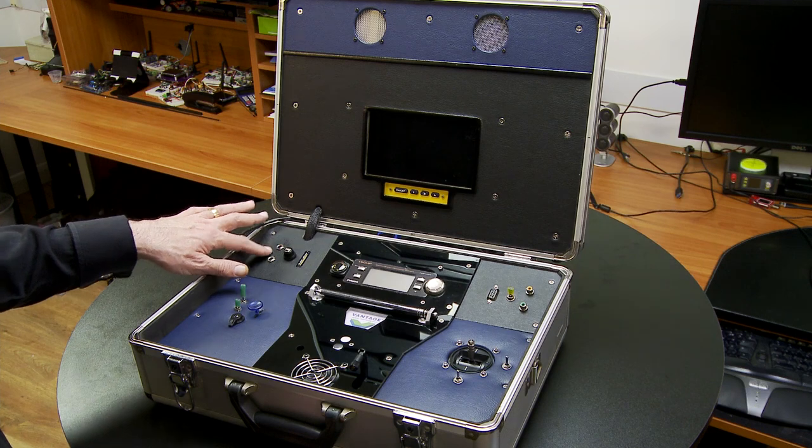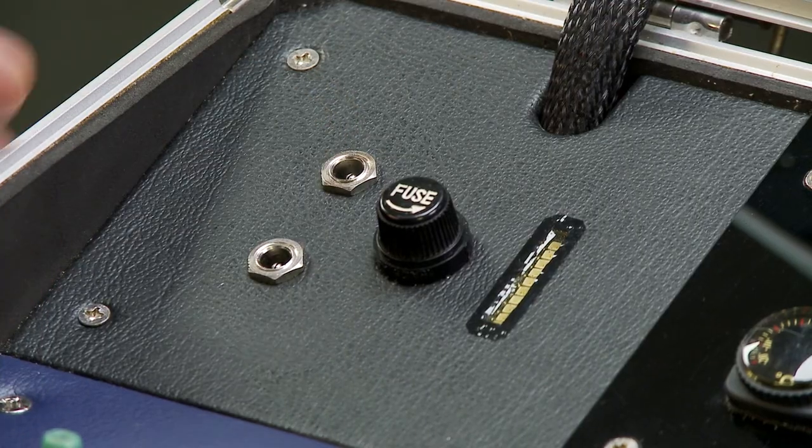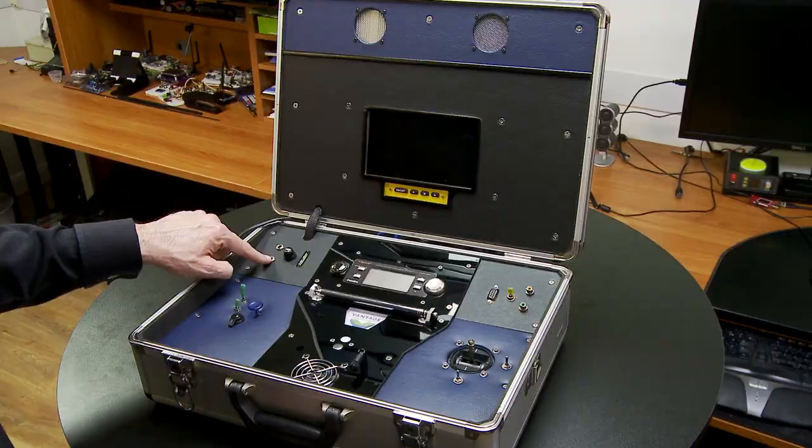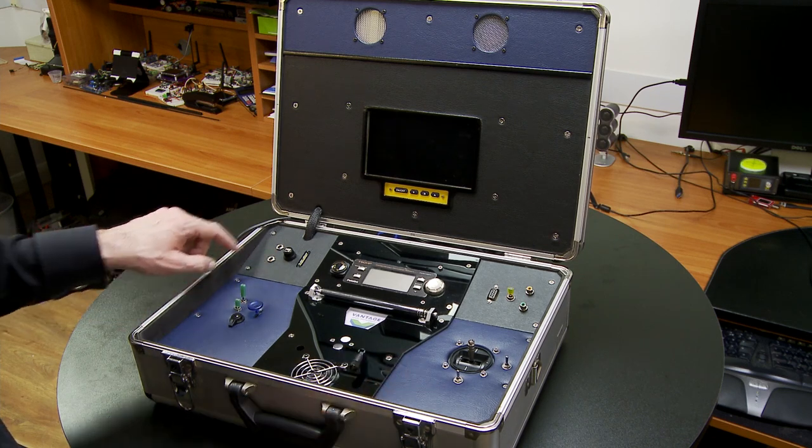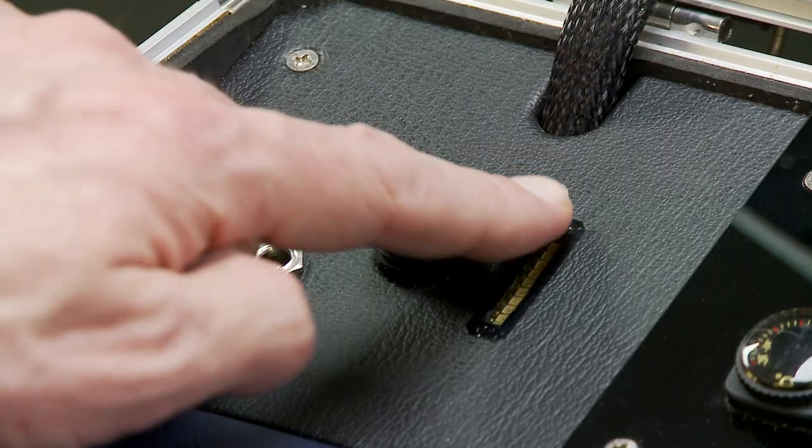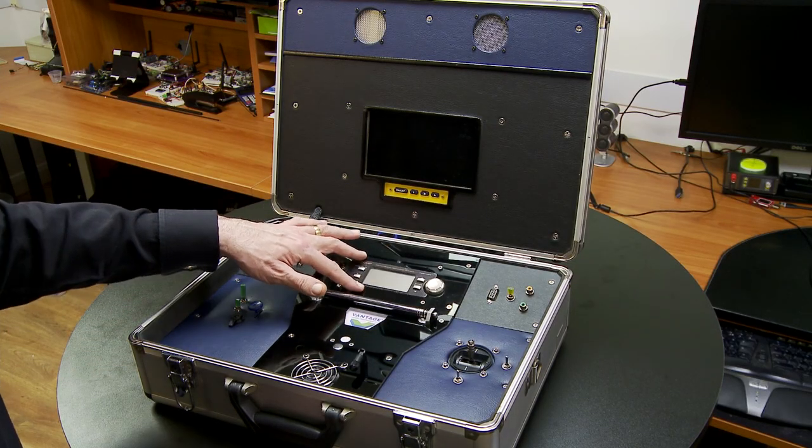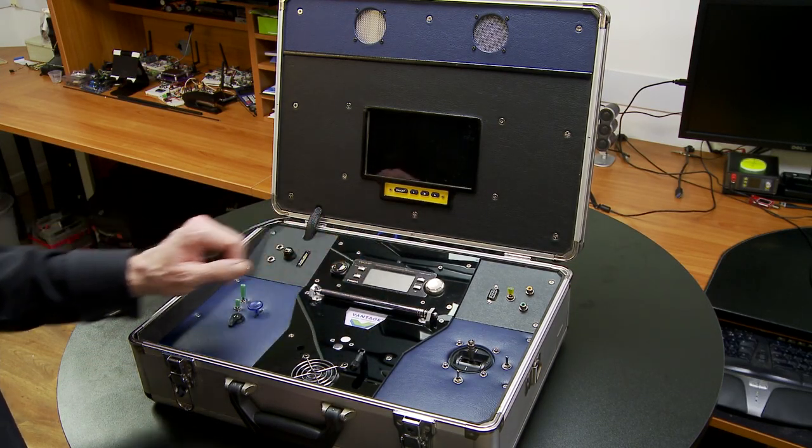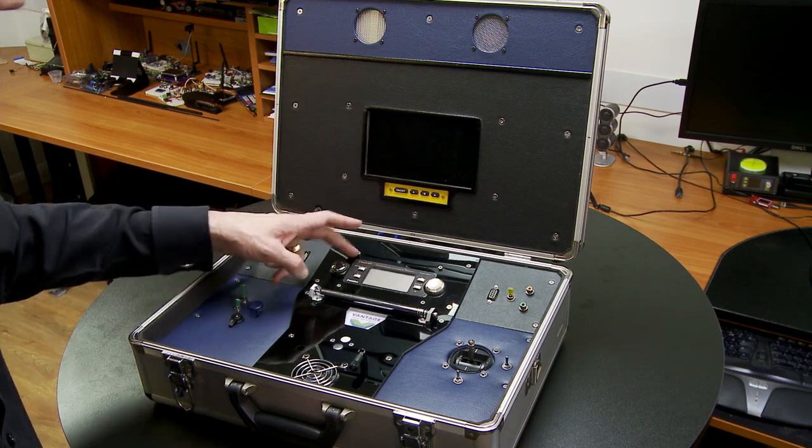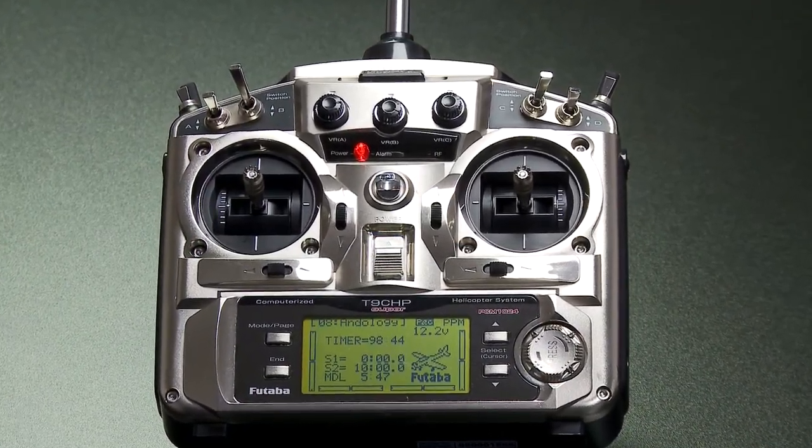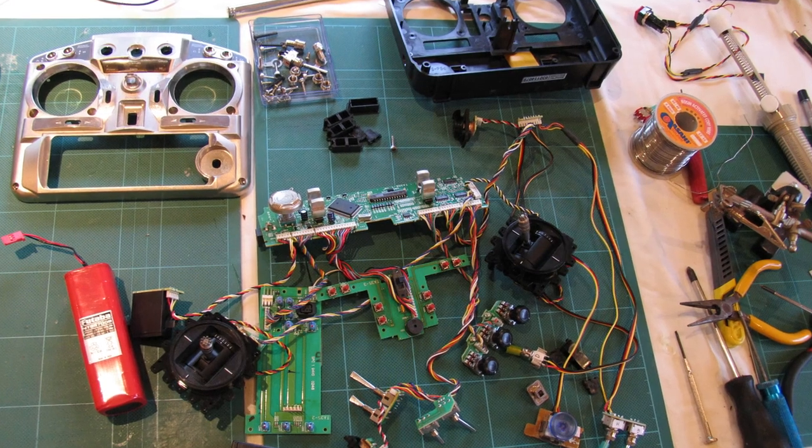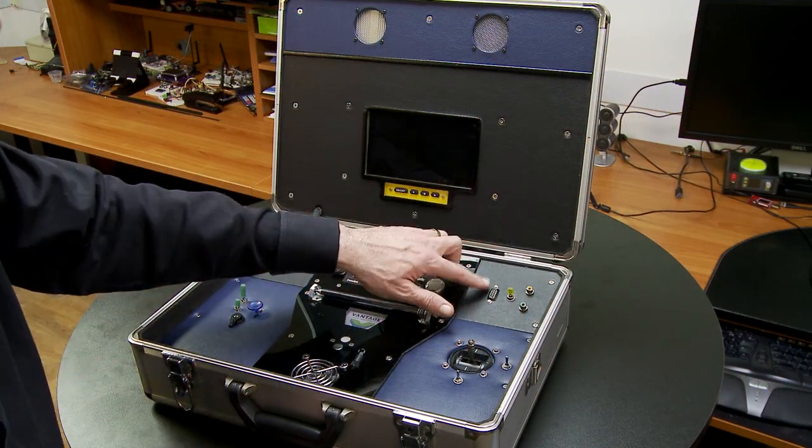And then obviously we've got the main TFT screen there which is 7 inch 16 by 9, and then coming down we've got the power panel here with an auxiliary power input, a recharge port for the main internal batteries, a fuse and a bar graph to show the battery level. And then the main RC controller here is a Futaba T9CHP. Typical Futaba controller which I've just taken apart and embedded inside here.